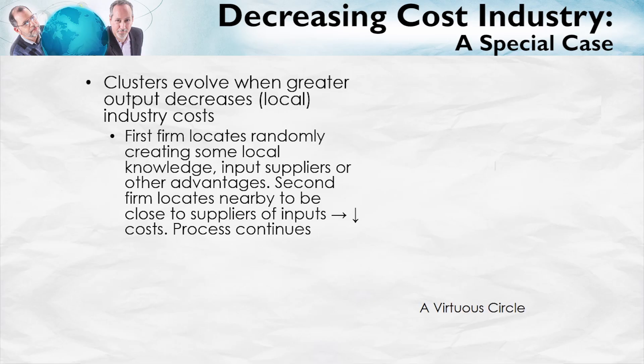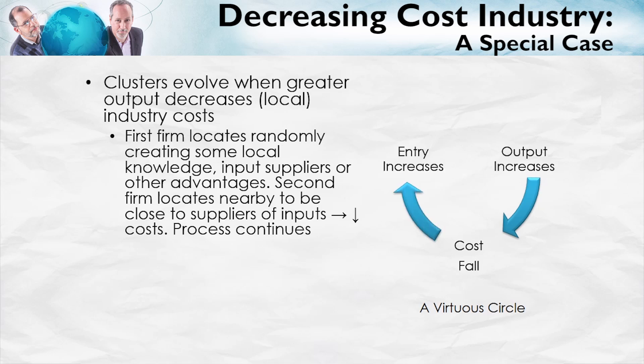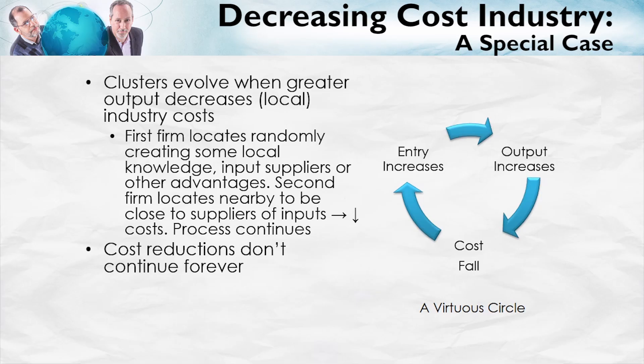You can think about this as a virtuous circle. Output increases with the first firm; that produces some decreases in costs. Costs falling increases entry, as other firms come into that area to take advantage of those lower costs, and that increases output, and the process continues. Of course, the process doesn't continue forever — we don't find costs going to zero. But it can continue long enough so that Dalton, Georgia gets an overwhelming advantage.